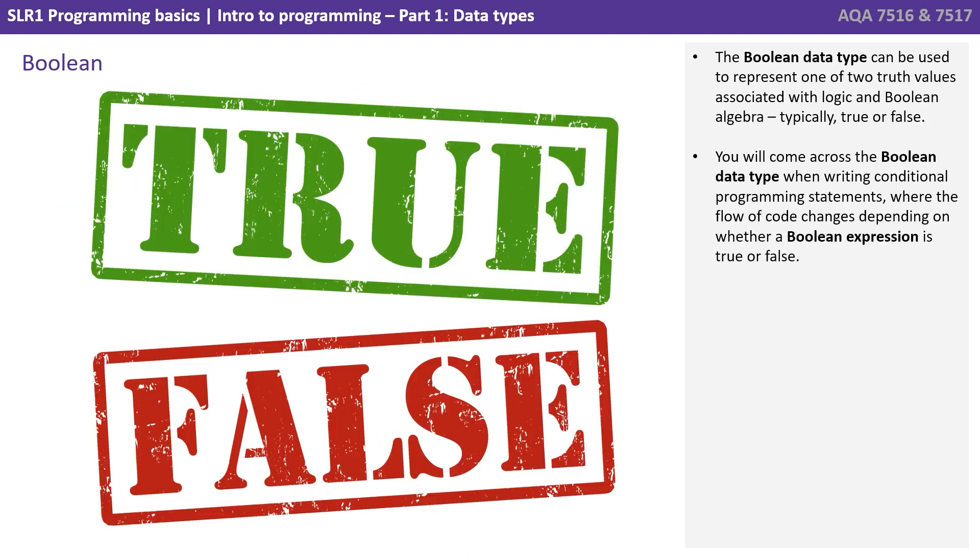Next, we have the boolean data type. And this can be used to represent one of two truth values associated with logic and boolean algebra. Typically, true or false. You will come across the boolean data type when writing conditional programming statements, where the flow of code changes depending on whether a boolean expression is true or false.